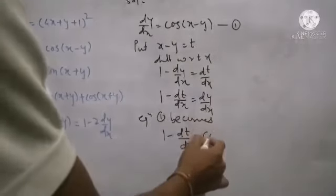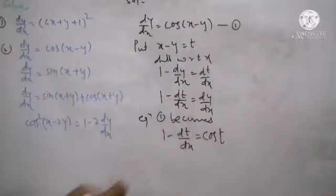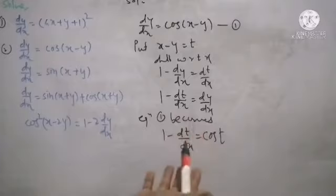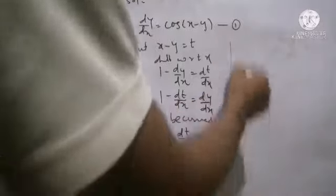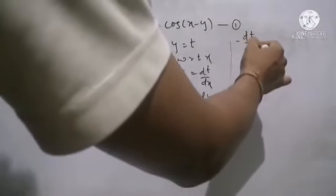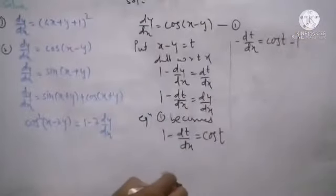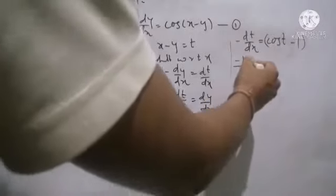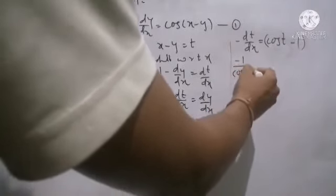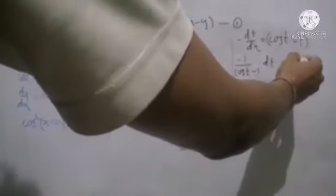To make this variable separable, we separate the operator. Keeping dt by dx on the left hand side, we take 1 to the right hand side, giving minus dt by dx equals cos t minus 1. Now operators are separated. We take dx to the right hand side and the term of t in bracket to the left hand side. On the left hand side: minus 1 in numerator, denominator cos t minus 1, and dt. Taking the minus 1 from numerator into denominator changes the signs: minus 1 becomes plus 1 and plus cos t becomes minus cos t, giving denominator 1 minus cos t.